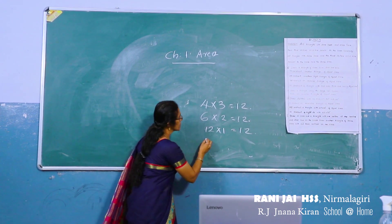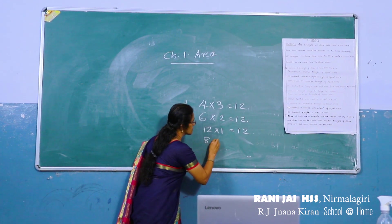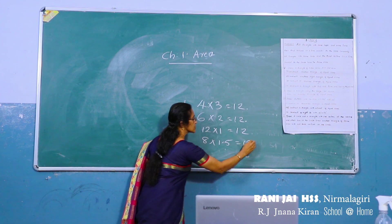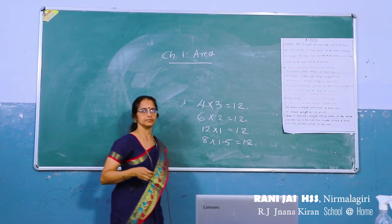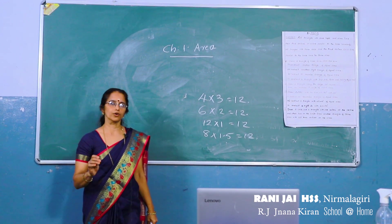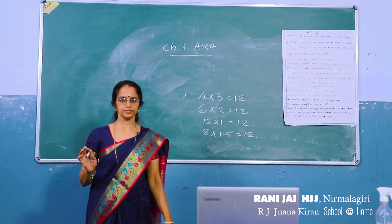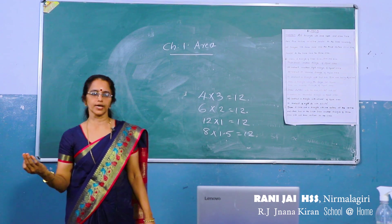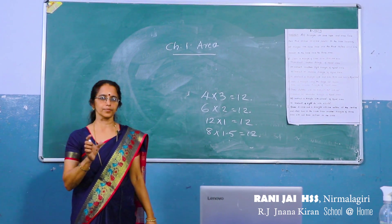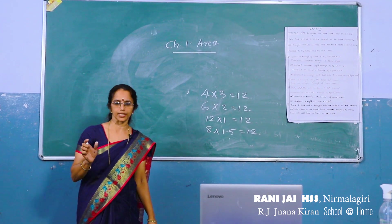Also, 8 into 1.5 equals 12. Now we can draw the figure. You know how to draw a rectangle. With the length and breadth, we can draw a rectangle.